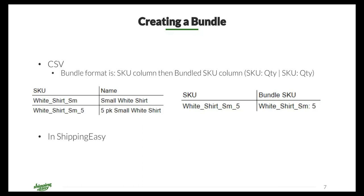Within ShippingEasy we have two ways to create a bundle. The first is via CSV. When creating a CSV bundle setup, you'll need a minimum of two columns. The first column is the SKU column, and the second is the bundle column. In the SKU column, list all of the SKUs for the bundles you want to work with — these need to be added into ShippingEasy's product list on your account before taking this step. The bundle column is where you tell us exactly what goes into the bundle and how much.